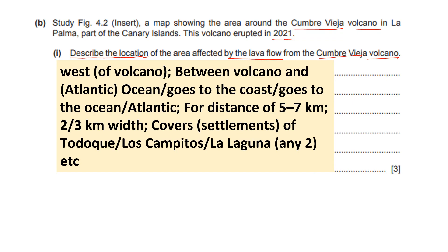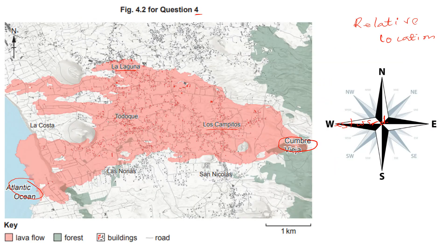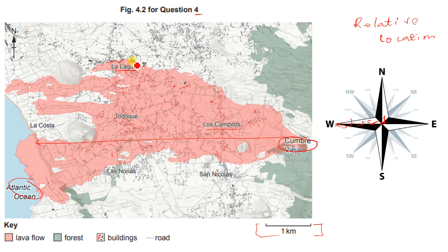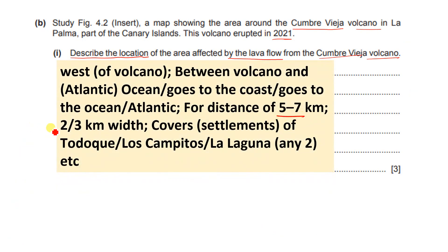The lava flow is west of the volcano, between the volcano and the Atlantic Ocean. It covers a distance of five to seven kilometers in length and a width of two to three kilometers, covering settlements along the way. To calculate these distances, you use a ruler to measure on the map and then apply the scale to convert to real-world distances. Even without stating exact distances and widths, naming the direction and settlements will earn your three marks.